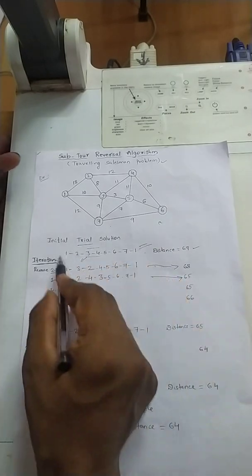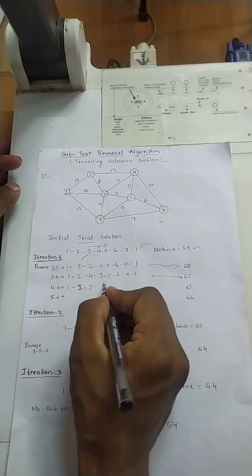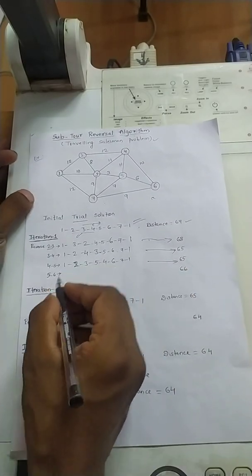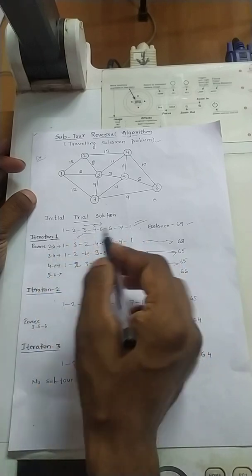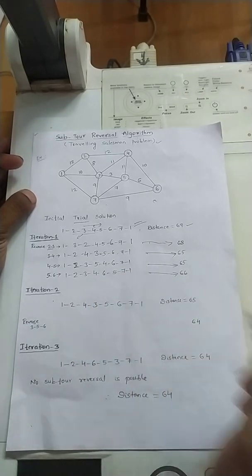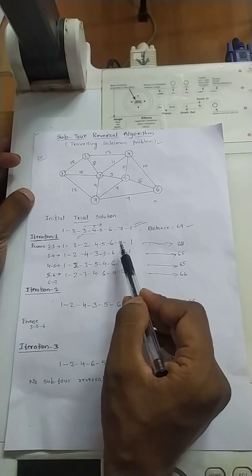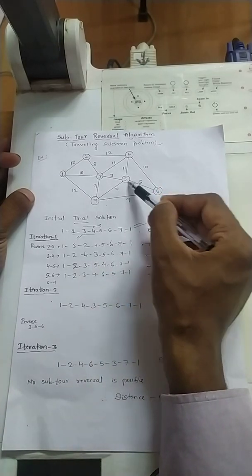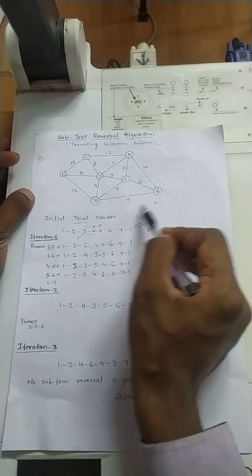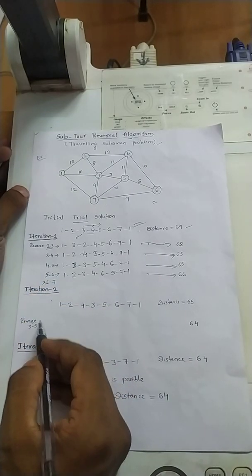If I reverse 4 and 5, the path becomes 1, 2, 3, 5, 4, 6, 7, 1 — distance is also 65. Reversing 5 and 6 gives 1, 2, 3, 4, 6, 5, 7, 1 — distance is 66. If I reverse 6 and 7, after node 5 I would go to 7 then 6, but there is no path from 6 to 1, so this combination cannot be considered.